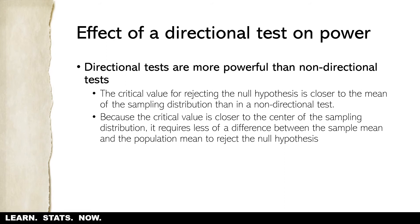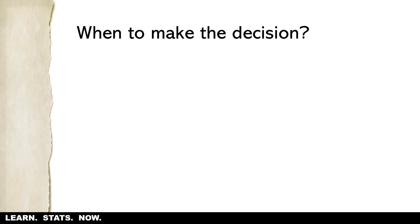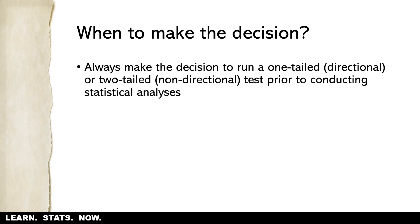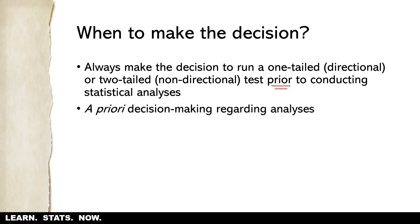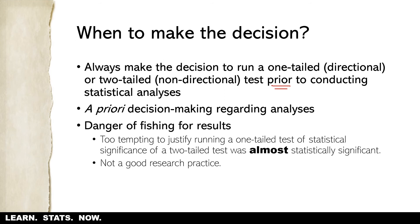The question is: when do you decide to run a one-tailed test versus a two-tailed test? You always make that decision prior to conducting statistical analyses — this is called an a priori decision. The reason is simple: if you don't, you're in danger of fishing for results. If you ran a two-tailed test and the result was almost statistically significant, it becomes too tempting to then post hoc justify running a one-tailed test, which you would know would achieve statistical significance.